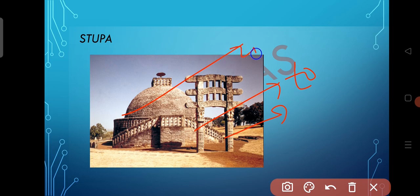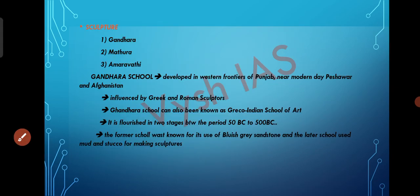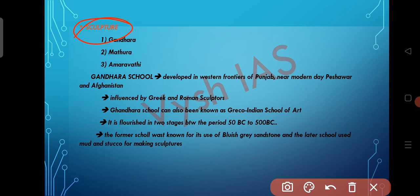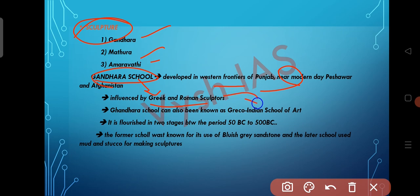The Medhi is a pedestrian path connected with two stairs around the stupa. Now let's see about sculpture during the post-Mauryan period. There were three dominant schools of sculpture: Gandhara, Mathura, and Amaravati. The Gandhara school developed in the western frontier of Punjab near modern-day Peshawar and Afghanistan. It is influenced by Greek and Roman sculpture, which is why it is also known as the Greco-Indian school of art. It flourished in two stages between 50 BC to 500 AD — in the first stage they used bluish-grey sandstone, and in the later stage they used mud and stucco.